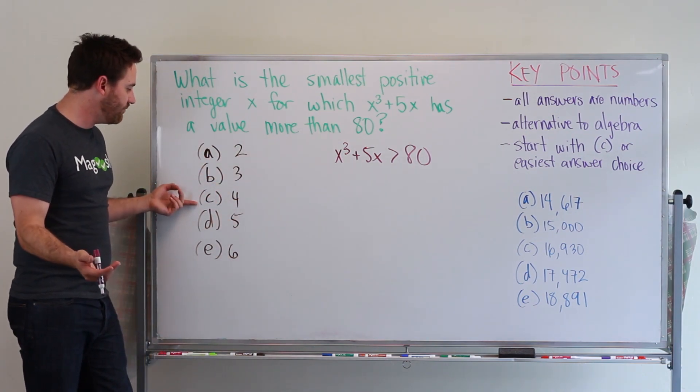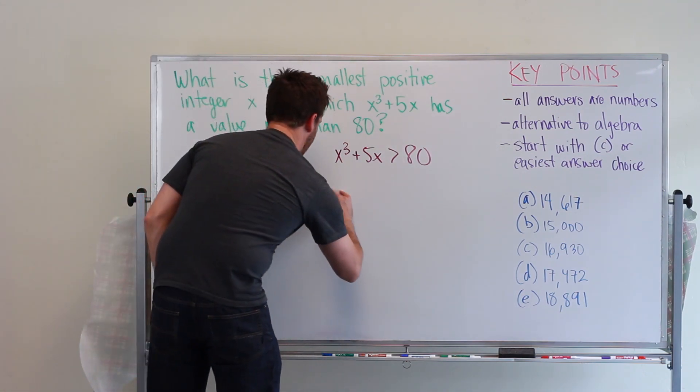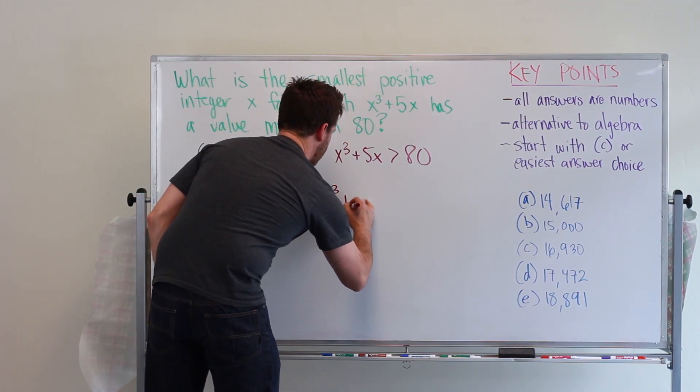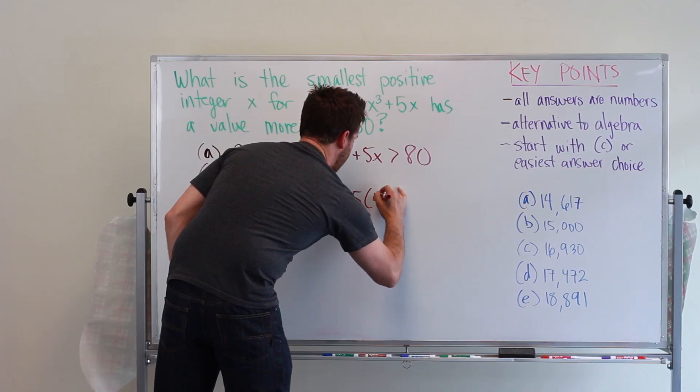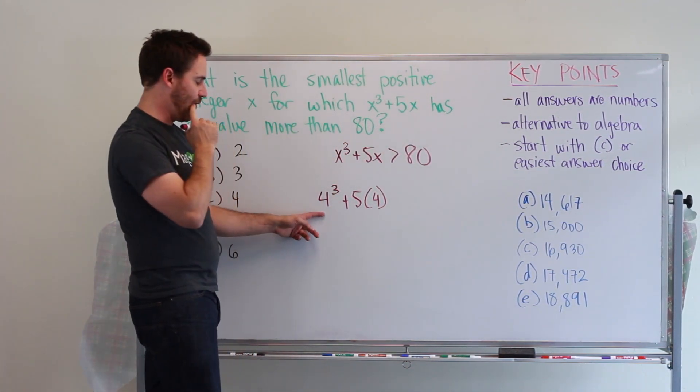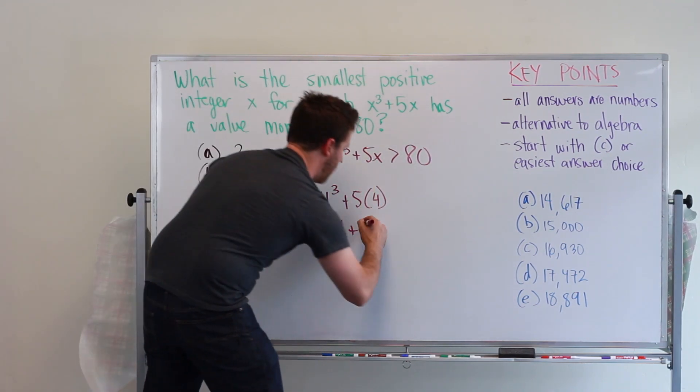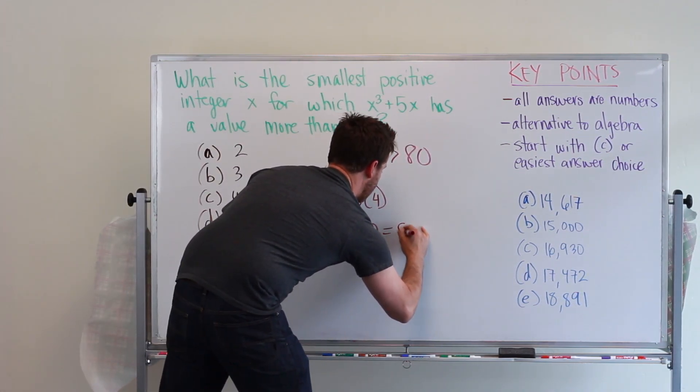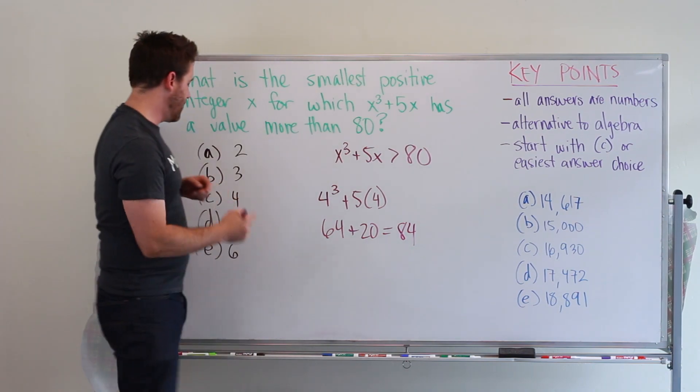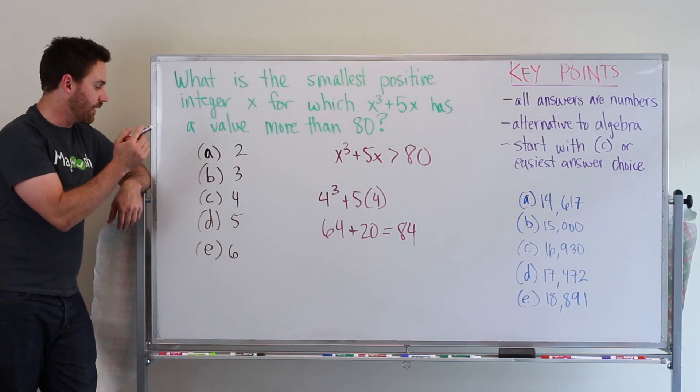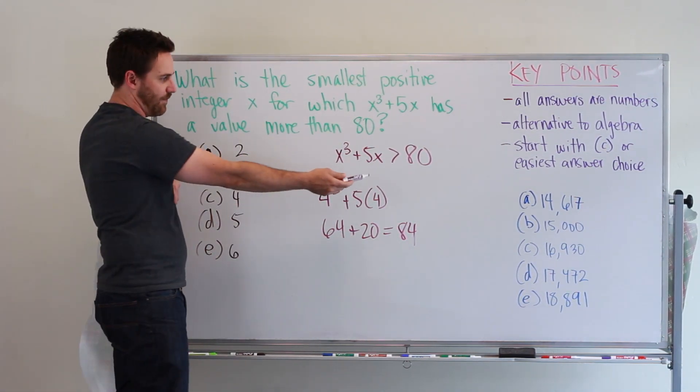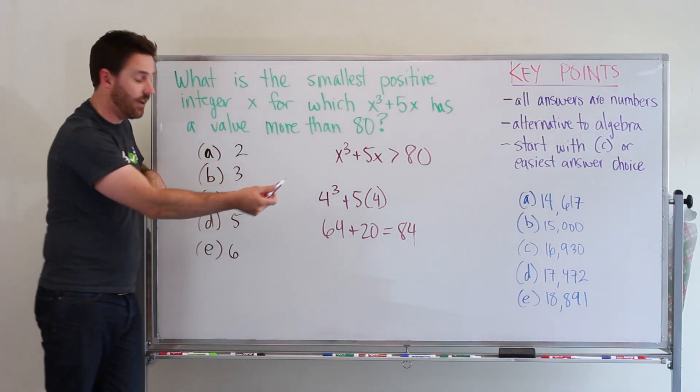And so as I said, let's start with C. So I'll plug in, I'll make 4 cubed plus 5 times 4. So 4 cubed is 64, and then 5 times 4 is 20, and that gives me 84. So I know now that 4 is an integer that does give me a number greater than 80 when I plug it in.